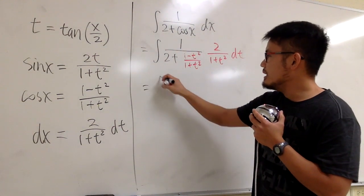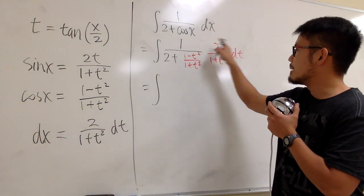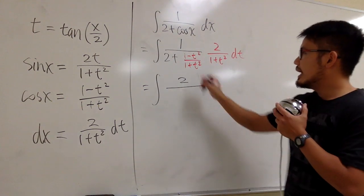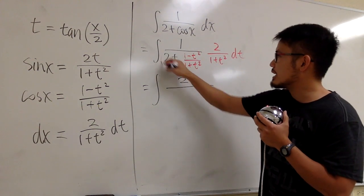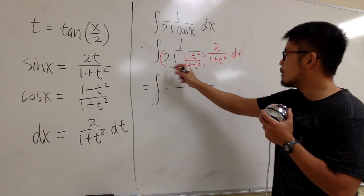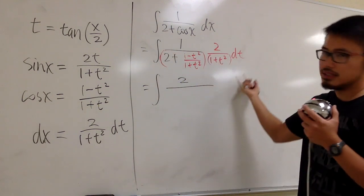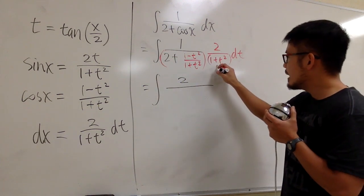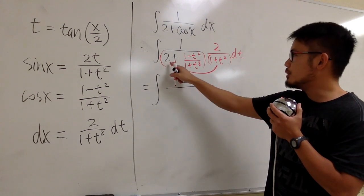So this is the integral. On the top, we have 1 times 2, which is just a 2 on the top, over. And this part right here, it technically has the parentheses. And it will multiply with this part, 1 plus t squared, right? So I'm going to take this and then multiply with the 2. And we have to distribute it.